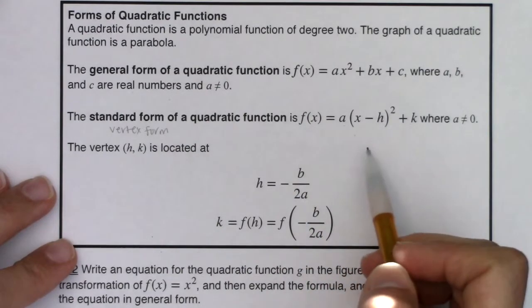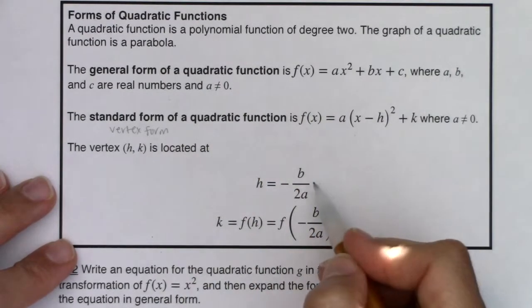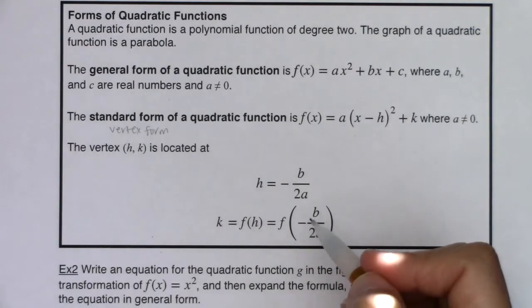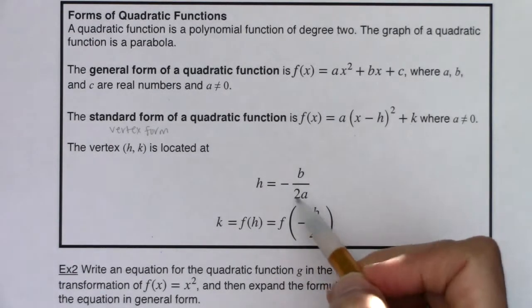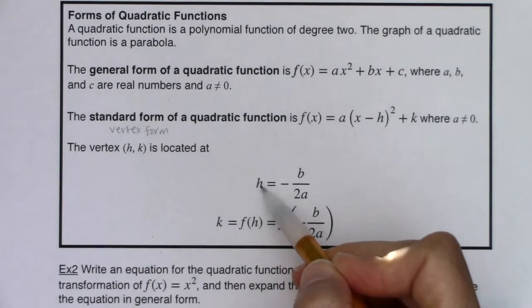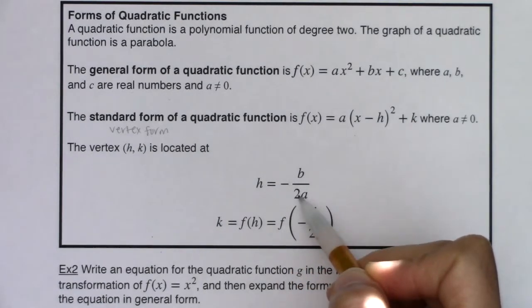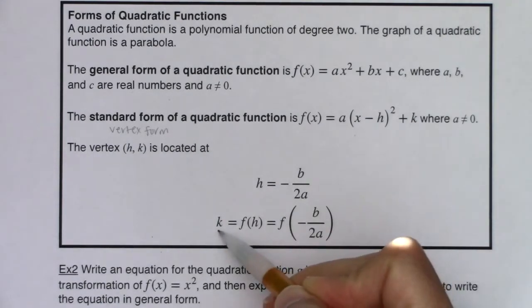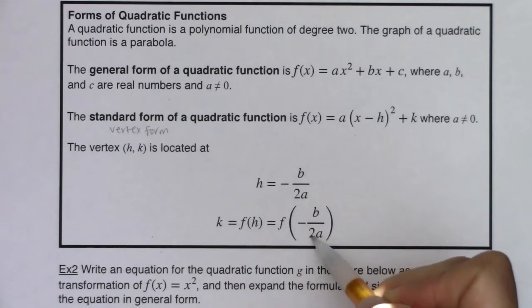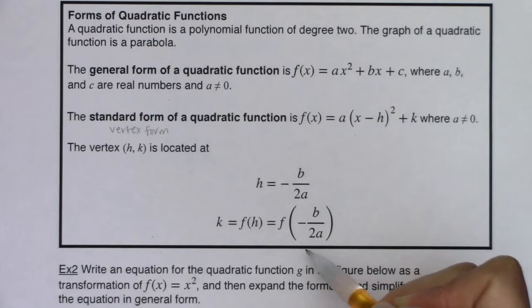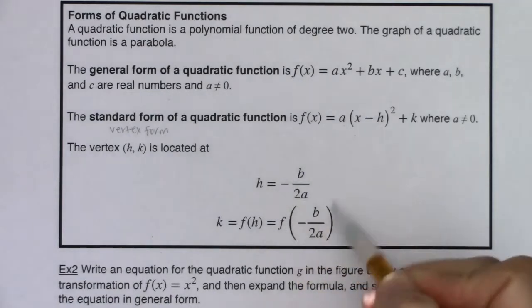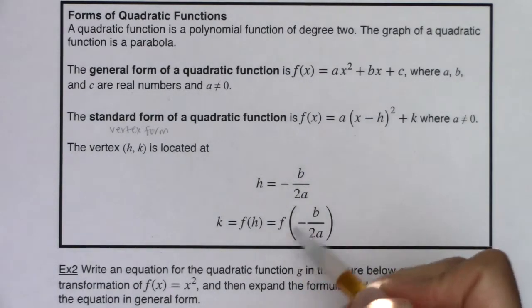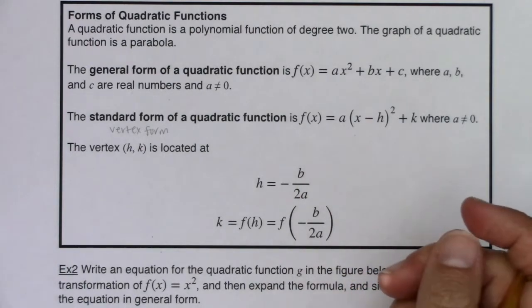Now if it's not in standard form, maybe it's in general form, there's a nice formula to help you find the coordinates of the vertex. The x coordinate or h is always -b/(2a) and then the y coordinate of the vertex k is that x coordinate -b/(2a) plugged into the function. And that looks a lot more convoluted than it is. We'll play it out in the next couple of examples.